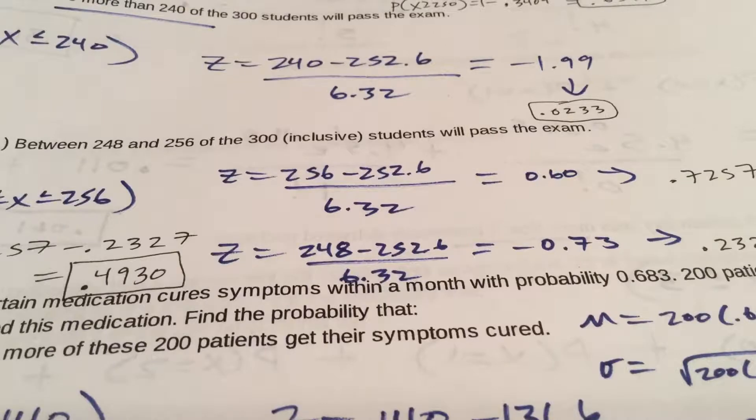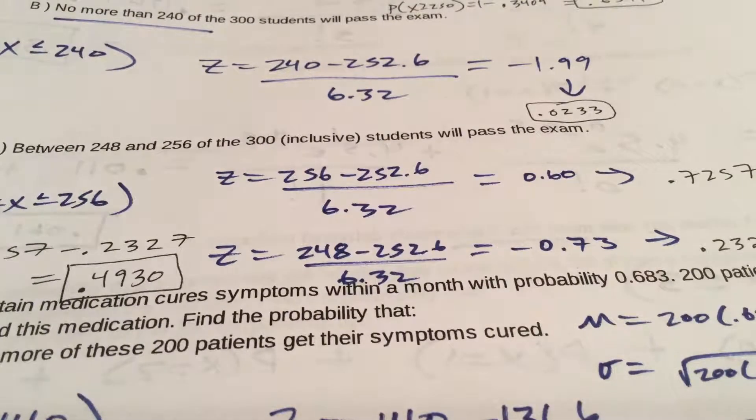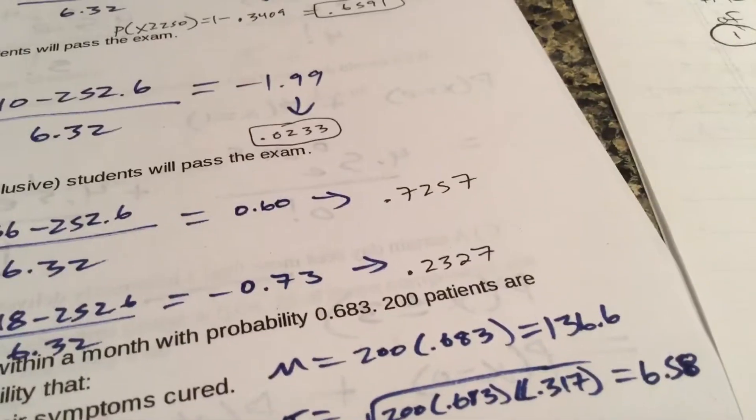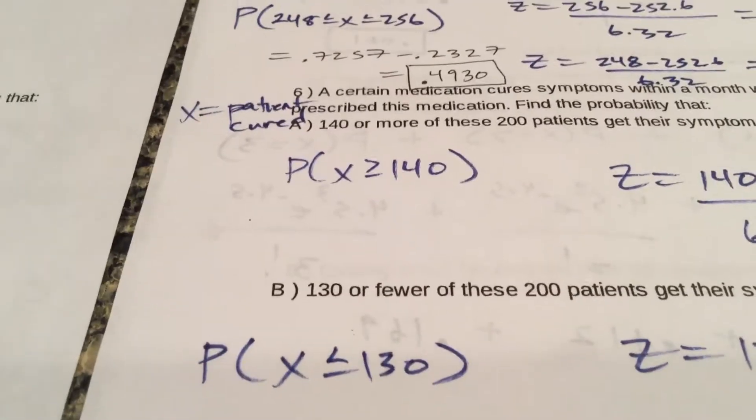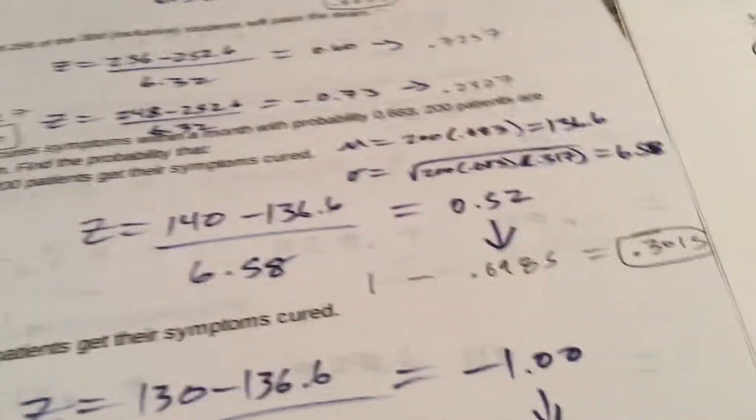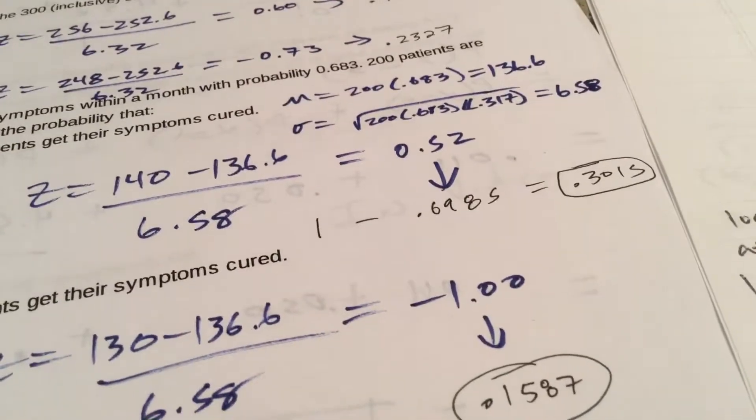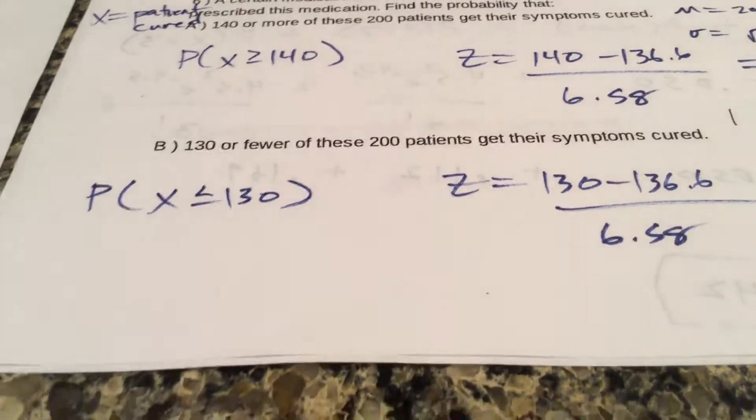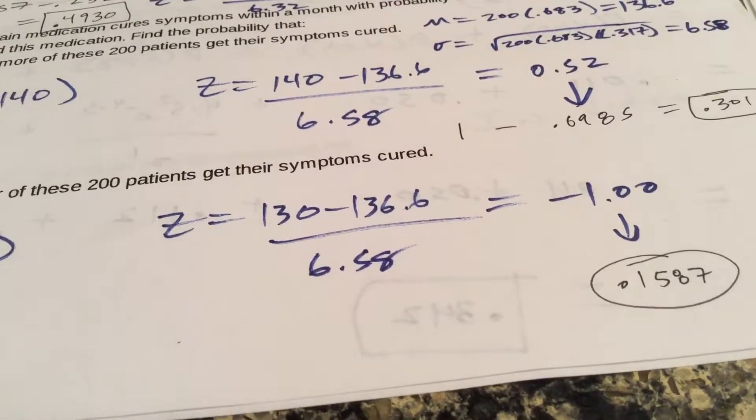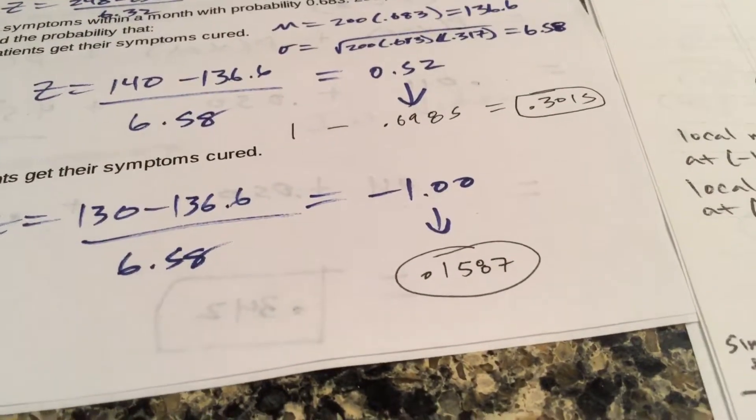Certain medication cures patients with that probability. X is a patient cured. We want the probability of 140 or more - x is greater than 140. So find your mean, your standard deviation. Greater than means you're gonna subtract it from one. And then 150 or fewer, that's less than or equal to - I'm sorry, 130 or fewer - that's less than or equal 130. That's your x, the mean stays the same, that's the probability.